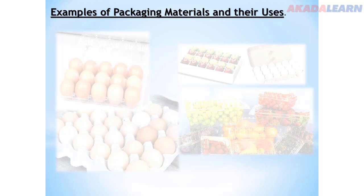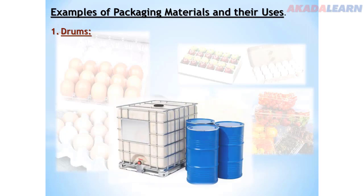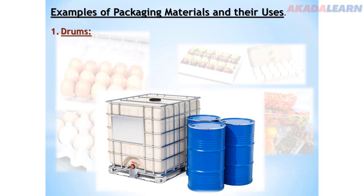Examples of packaging materials and their uses. There are different types of packaging materials. Number one: drums. These are generally made of metal or plastic. They are cylindrical, strong, durable and can be used for long-term storage. Materials that are packaged in them include palm oil, groundnut oil, palm kernel and soybean oil.